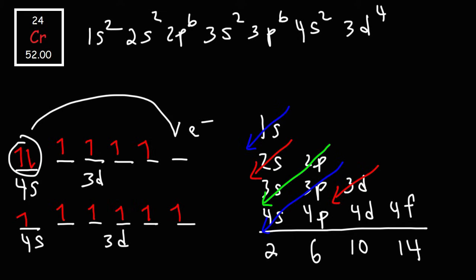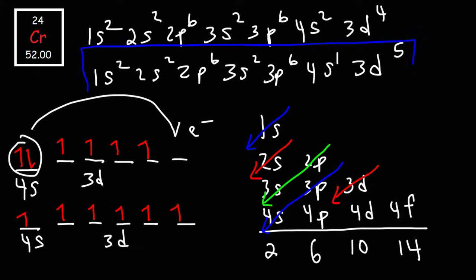So it turns out that the electron configuration of chromium is 1S2, 2S2, 2P6, 3S2, 3P6, 4S1 because we took an electron from the 4S and moved it to the 3D. So it's 4S1, 3D5. That is the electron configuration of the element chromium. That's just one of those exceptions that you need to keep in mind.